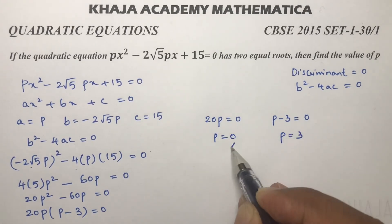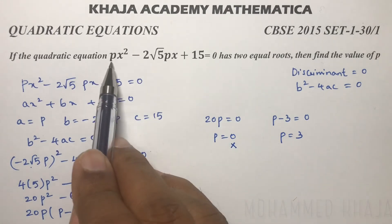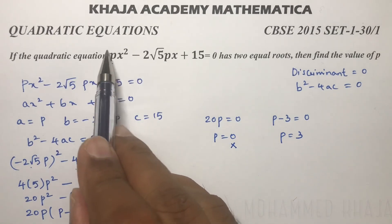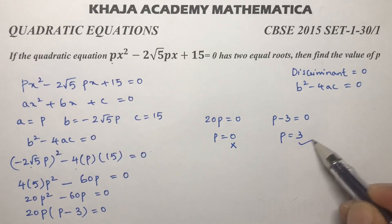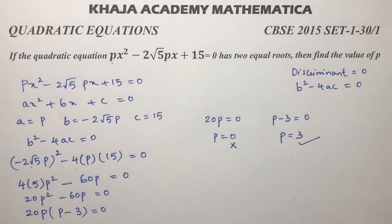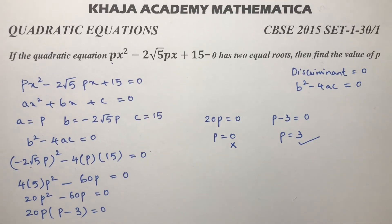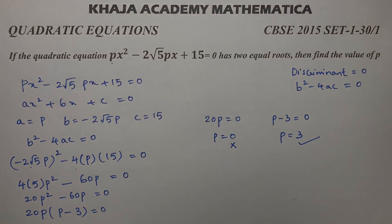p equals 0 is not possible because if p is 0, this will not be a quadratic equation. So the answer is p equals 3. The value of p is 3.